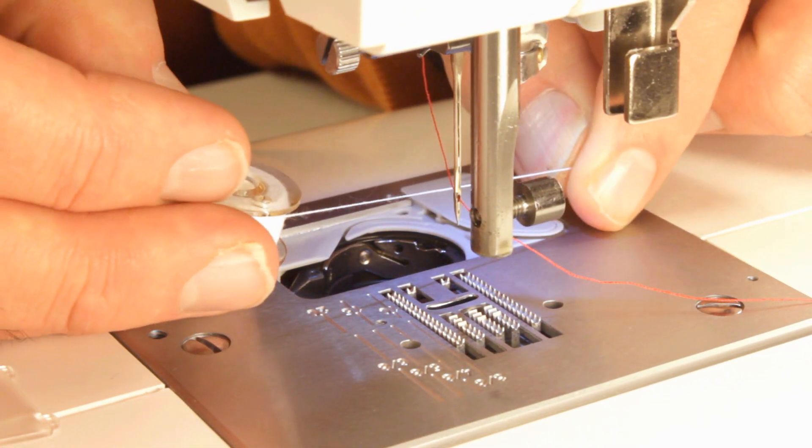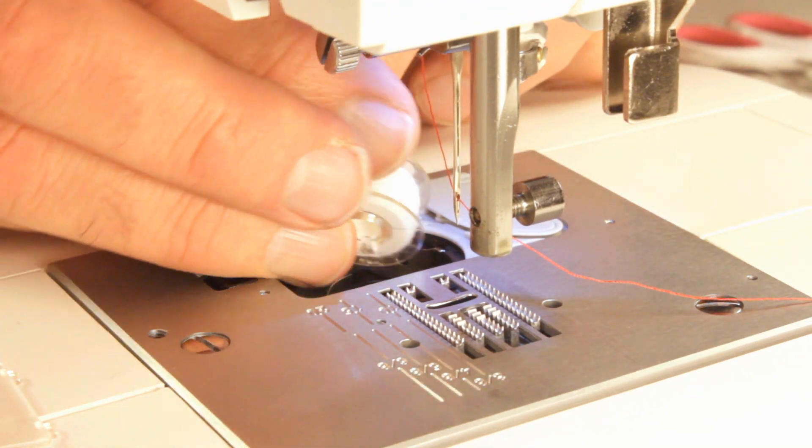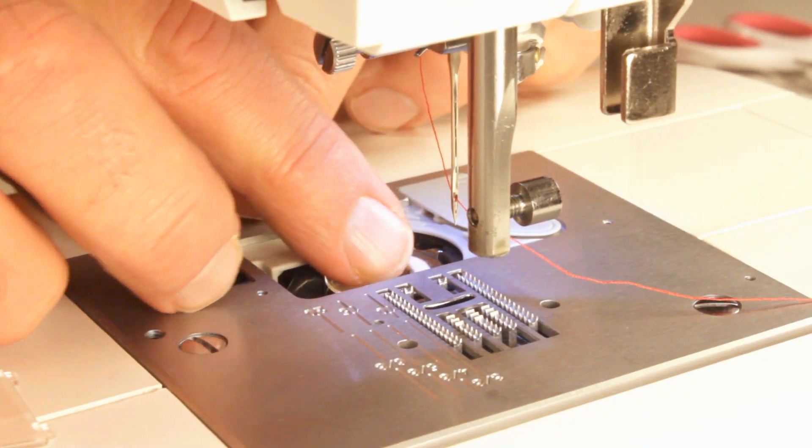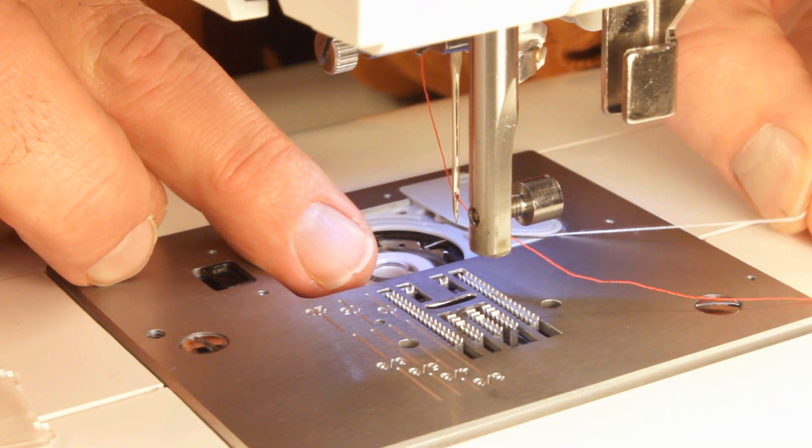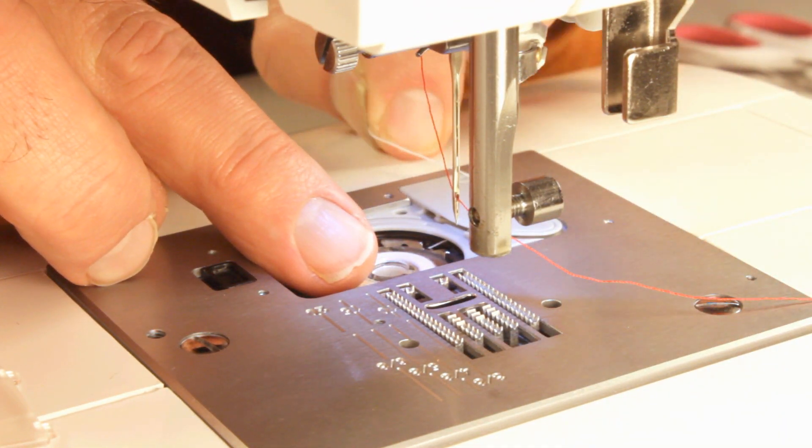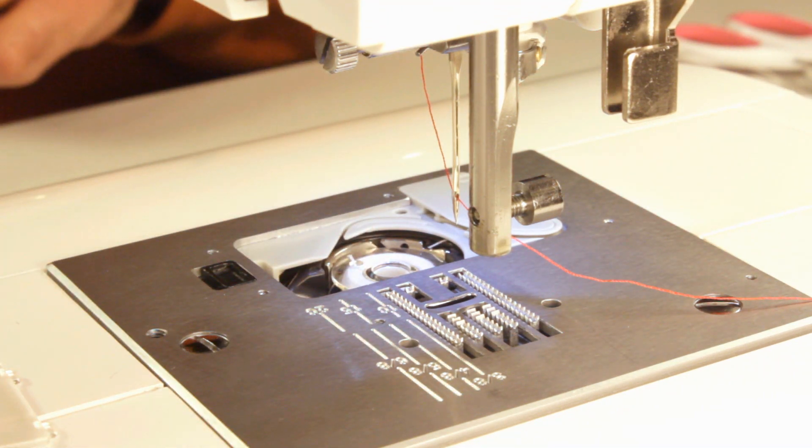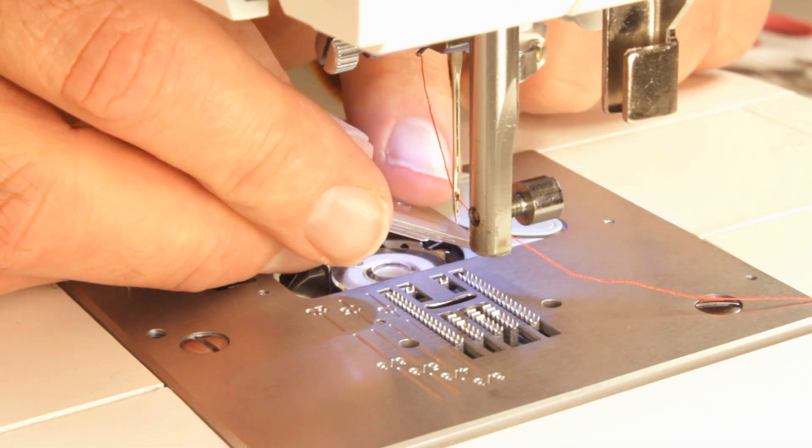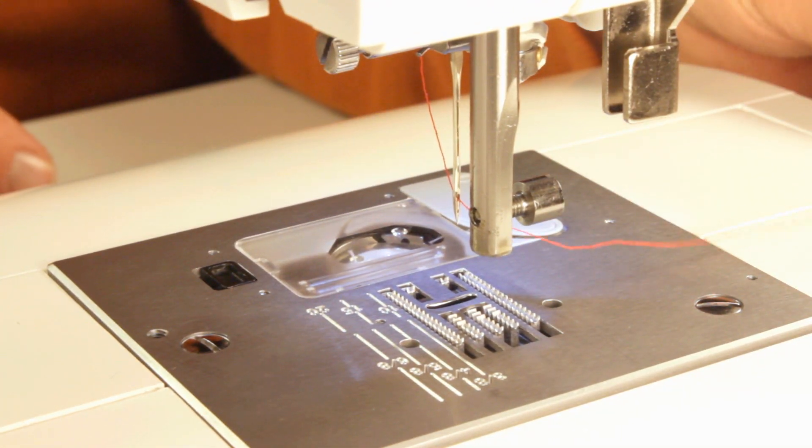Let me show you how you insert the bobbin. You want the thread coming off the top, like so. You drop it in the case. Then you pull it around this little plastic guide, over and back around. You cut your thread, and replace your bobbin case.